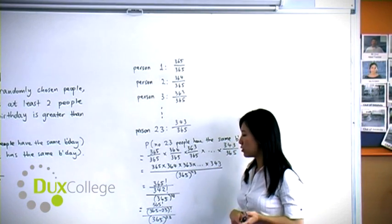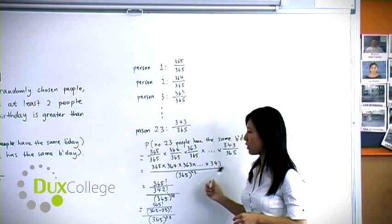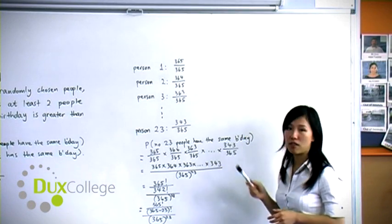Now on our denominator, it's easy to see. It's 365 to the power of 23. And on our numerator, it's just product of what numbers we have on the top.